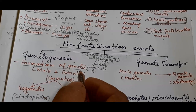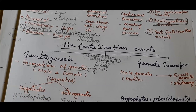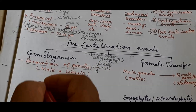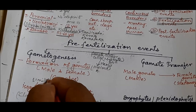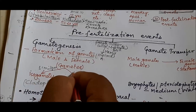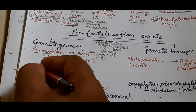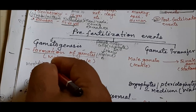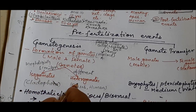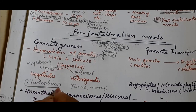Gametes can be male gametes or female gametes. When all gametes look morphologically similar to each other, they are called isogametes — as found in Cladophora. When gametes are morphologically different from each other, they are called heterogametes, as seen in Fucus and in human beings. Male heterogametes are called antherozoids in plants, or sperm in animals. Female gametes are called ovum or ova.